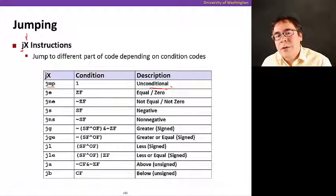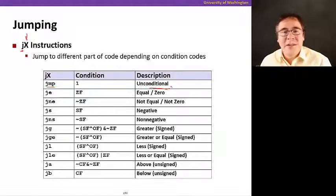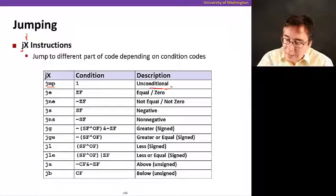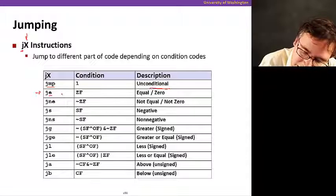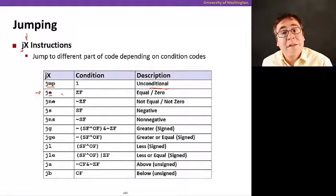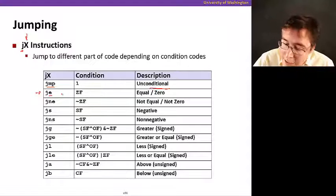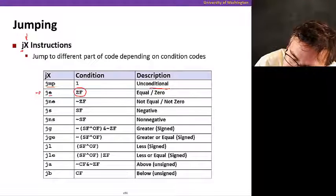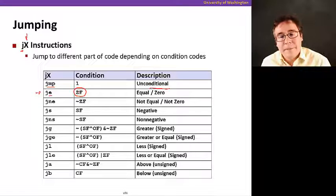It's going to take as a parameter an instruction address that it's going to jump to. Here's another one: if you do je, it means jump if equal or zero. That's going to be determined by this special condition code register called ZF.